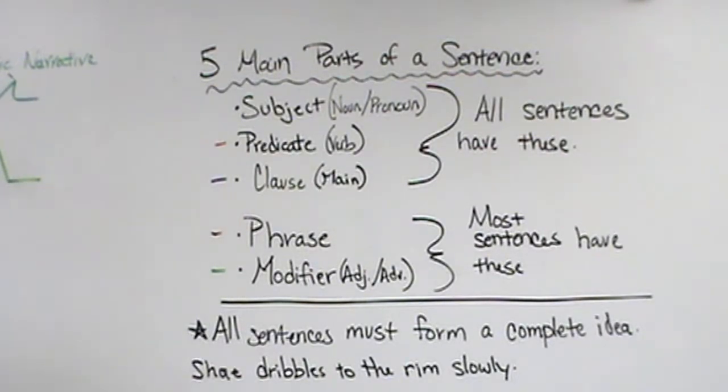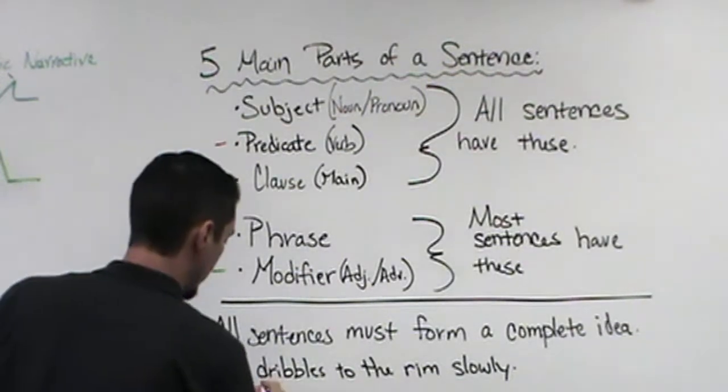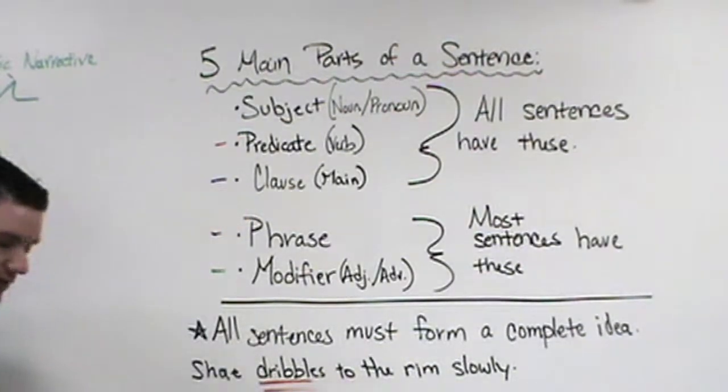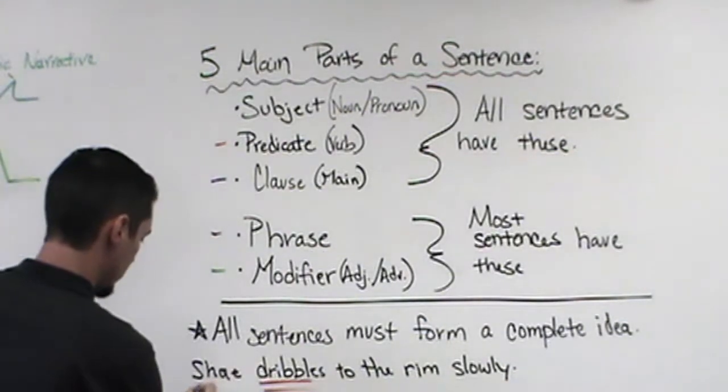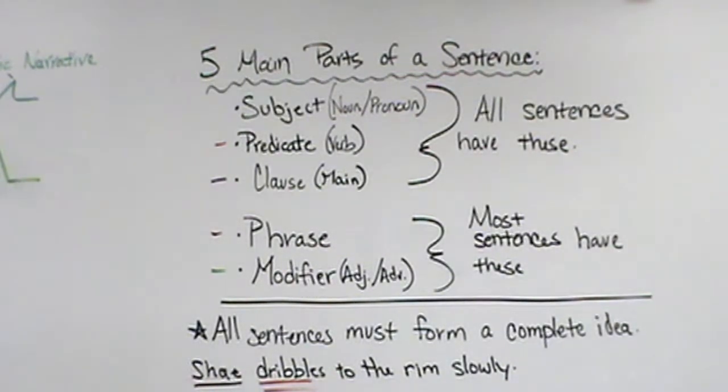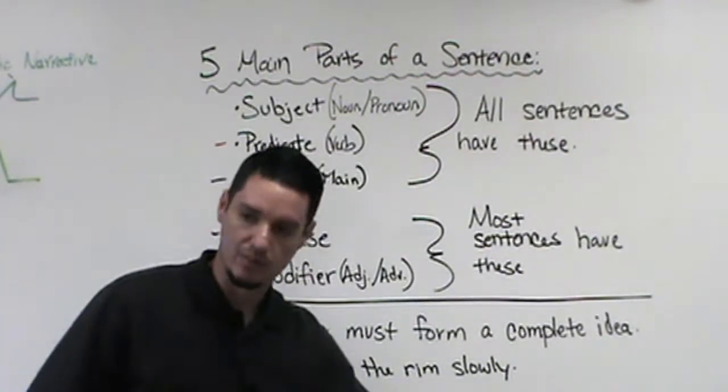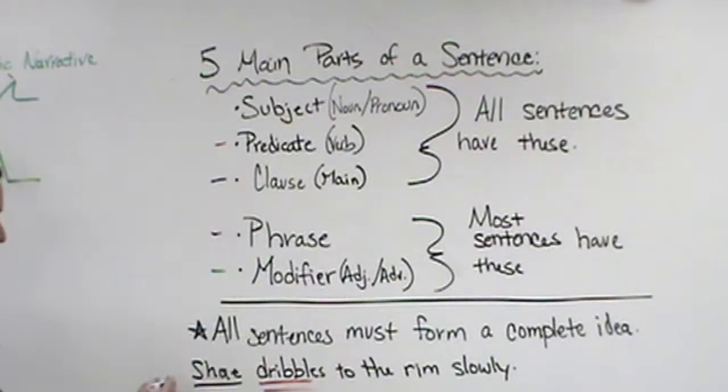Technically you're right. This is English Language Arts and I'm glad you said that. We should start with the verb or the action. What's our verb, our predicate here? Dribbles. Once we find the verb, we want to ask who dribbles? Shay. That creates our clause, our main clause. Shay dribbles. That's our independent clause.